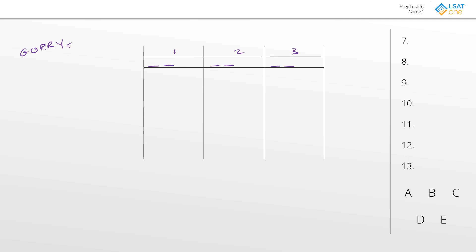Rule one: exactly one window includes both G and P — so exactly one GP block, no more. Rule two: exactly two R's, so R duplicates. Rule three: if a window has yellow, it can have neither green nor orange. That's just a roundabout way of saying Y can't be with G, and Y can't be with O. So we're not allowed YG and not allowed YO.